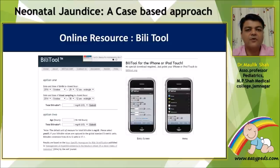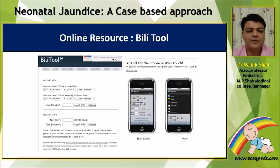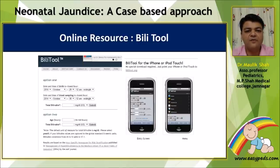If you prefer not to look at all these graphs, all these resources are available online or on your smartphone. You can use an online resource called the Billy tool, which is based on the AAP normograms and follows them very accurately. You can download the app on your smartphone or go directly to the Billy tool website.